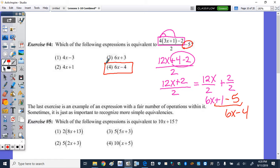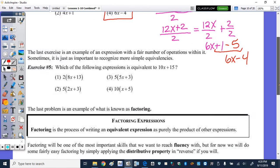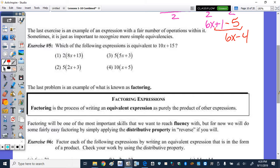So the last exercise is just an example of an expression with a fair number of operations within it. Sometimes it is just as important to recognize even more simple equivalences. So which of the following expressions is equal to 10x plus 15? So we're going to take each answer choice and distribute. Well, 2 times 8x is 16x. 2 times 3 is 6. That's not equal to 10x plus 15.